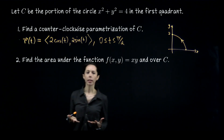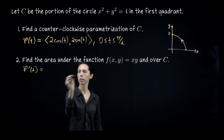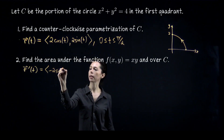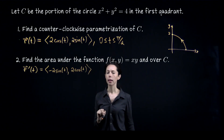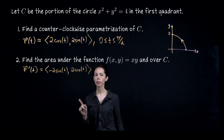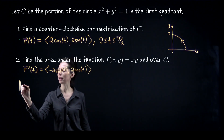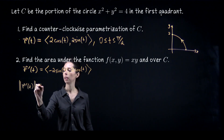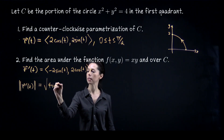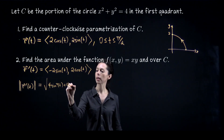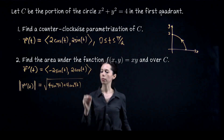Next, we need the velocity vector. From r(t), we compute r'(t) term by term: r'(t) = (-2sin t, 2cos t). For the scalar line integral, we also need the speed — the length of the velocity vector. Squaring and adding the components gives √(4sin²t + 4cos²t). Since sin²t + cos²t = 1, this simplifies to √4 = 2. So this is a constant-speed parametrization.